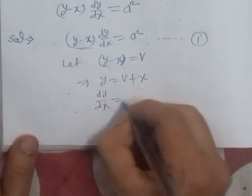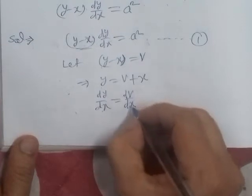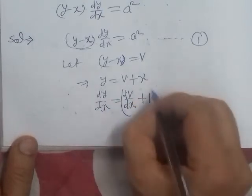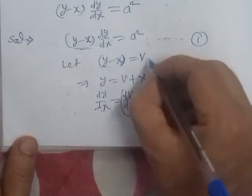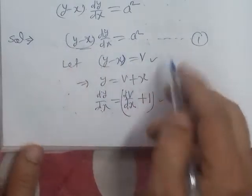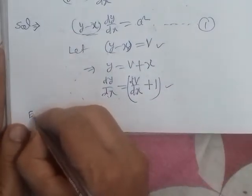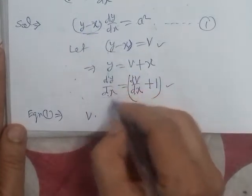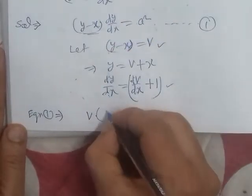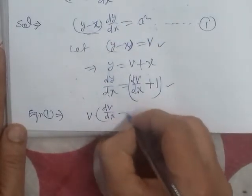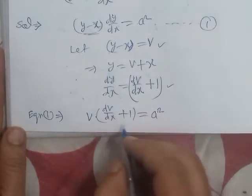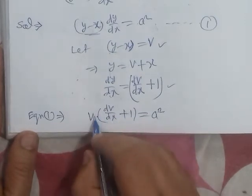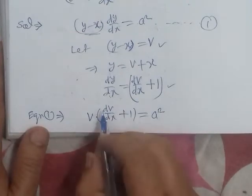We replace the value of dx. From the substitution v = y minus x, we get dv/dx plus one. We put this into equation number one to reduce it. Taking the value of v and the value of dx plus one on the right hand side, we substitute into the equation.